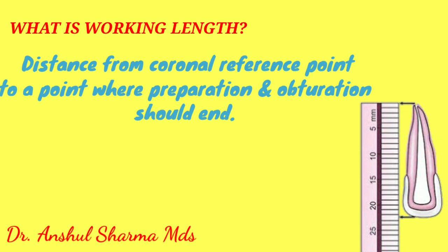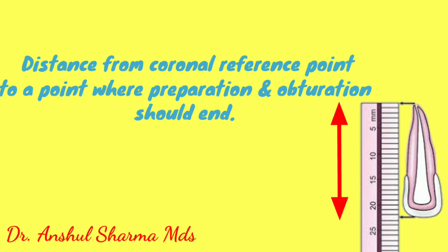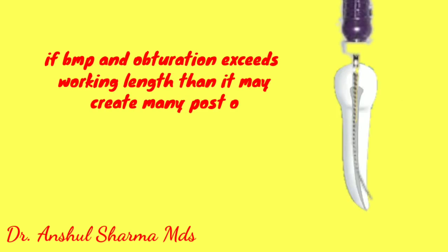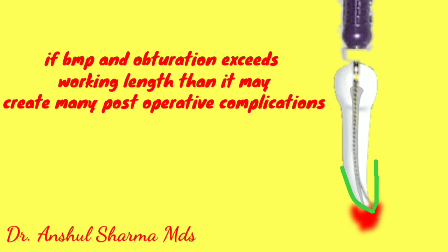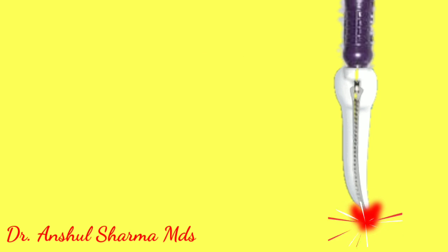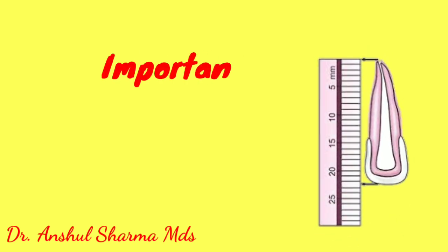Working length is the distance from a coronal reference point to the point at which canal preparation and obturation should end. As we can see in this diagram, if our biomechanical preparation and obturation exceeds the working length out from the apex, it may create many postoperative complications like pain or therapy failure.